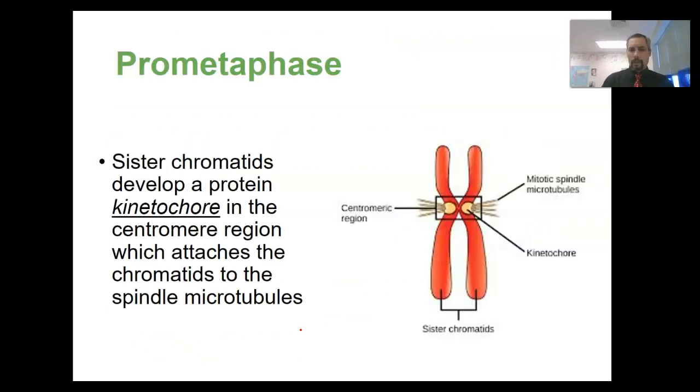During prometaphase, we have these sister chromatids here. So these are basically copies of a chromosome. They're referred to as sister chromatids because they're still connected here at the centrosome, or the centromere, excuse me. And so this kinetochore forms, this protein kinetochore forms in this centromere region, and that attaches to these spindles, microtubule spindles, which are going to eventually pull those apart from each other.